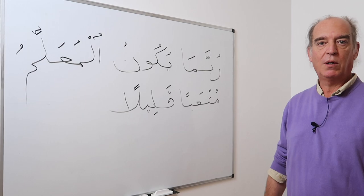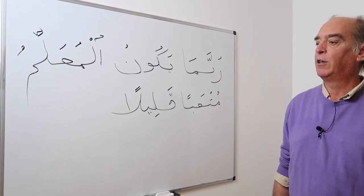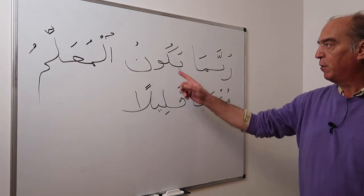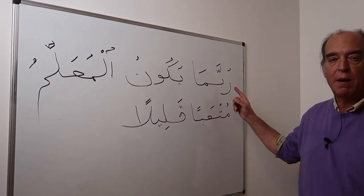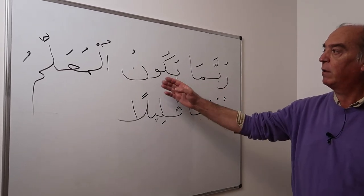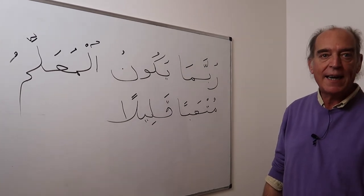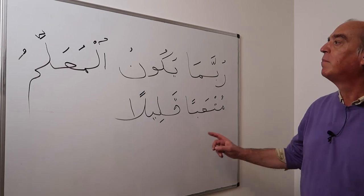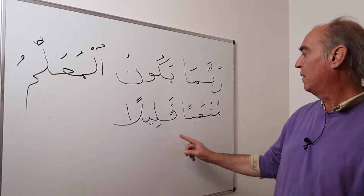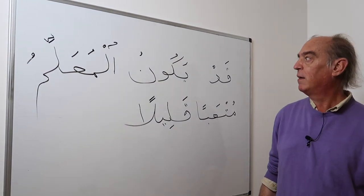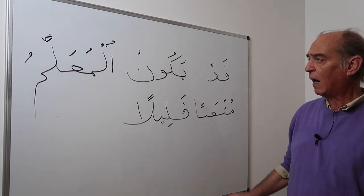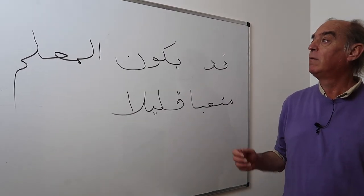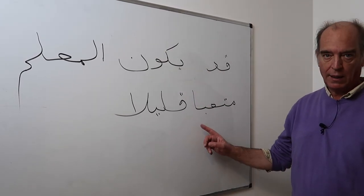In the present tense we do not use the verb 'to be,' so we just use a nominal sentence: al-muallimu mutabun. But you may use yakounu, especially if preceded by rubbama, which means 'maybe' or 'perhaps,' to introduce a guess: rubbama yakounu al-muallimu mutaban qaleelan — the teacher could be a little tired. You have to respect the accusative here.